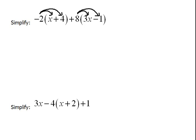So we always take care of our distribution first. So negative 2 times x would be negative 2x. Negative 2 times 4 would be negative 8. Positive 8 times 3x would be positive 24x and positive 8 times negative 1 would be negative 8.